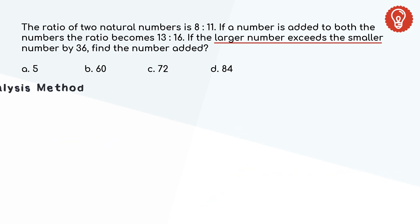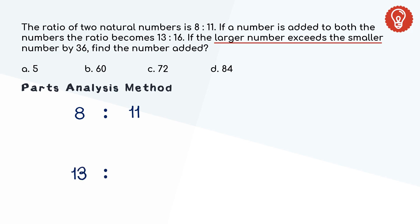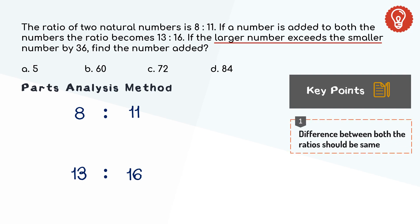Let's solve the same question using the path analysis method. Using the shortcut: two numbers are in the ratio 8 to 11. If a number is added to both sides of a ratio it becomes 13 to 16. To apply this method we need to check one thing: the difference between both the ratios and the numbers should be the same. Here, difference between 8 and 11 is 3, and the difference between 13 and 16 is also 3. If the difference is same we can go ahead, and we will see what if the difference is not same in the next question.